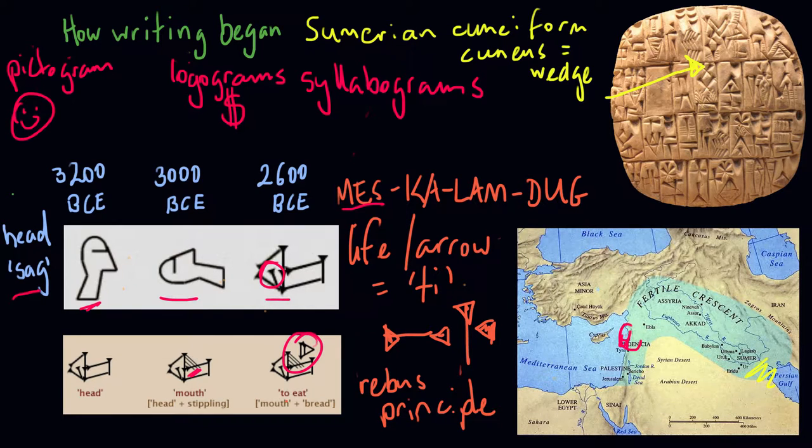So if we know something about how cuneiform developed, maybe the next question we can ask is why it was created. After all, we're talking about centuries and centuries of innovation and technological development to create a writing system. What motivated the effort behind this innovation?